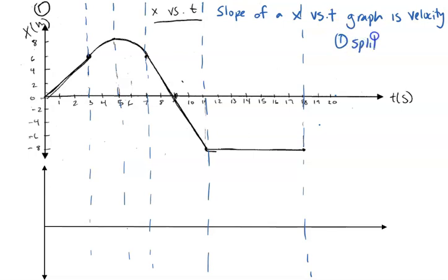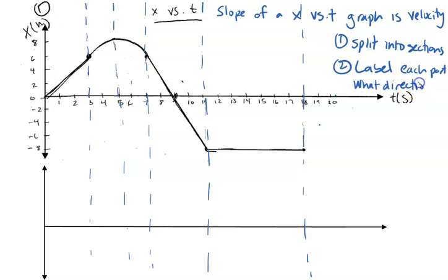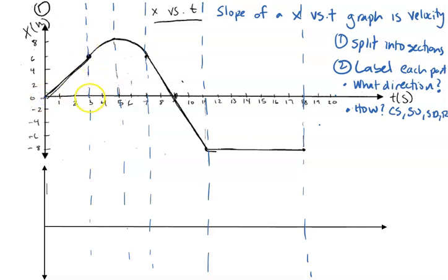So first I split into sections. Now I'm going to label each section with two things: what direction the object is moving — positive or negative — and how it is moving: constant speed, speeding up, slowing down, or at rest. So looking at the first section, it's starting at zero meters and going up to six meters in three seconds. A flat line means it's going at a constant speed, and it looks like it's moving in a positive direction.